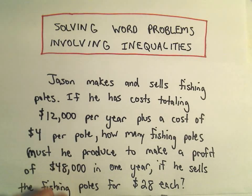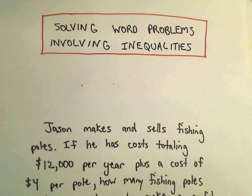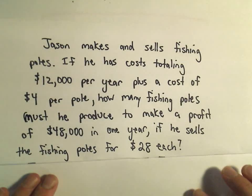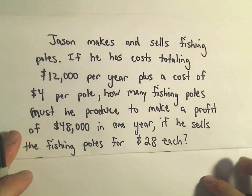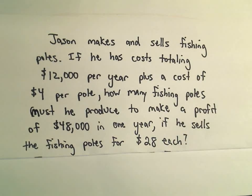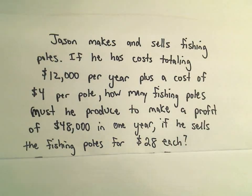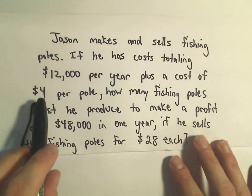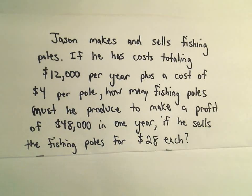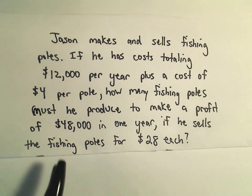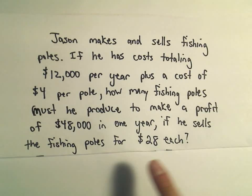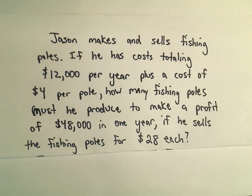In this video I want to do another example of solving a word problem involving inequalities. Suppose we've got our buddy Jason, and he makes a living by making and selling fishing poles. It costs him $12,000 a year plus $4 per each pole that he makes — maybe $1,000 rent a month in his little factory, plus costs to make each pole. We want to know how many fishing poles he must make, assuming he can sell them all, if he wants a profit of $48,000 in one year, and he sells the fishing poles for $28 each.